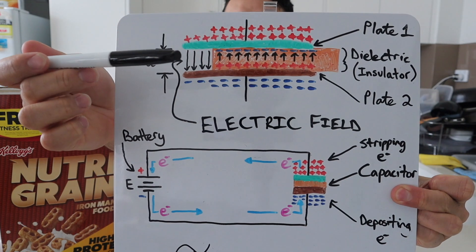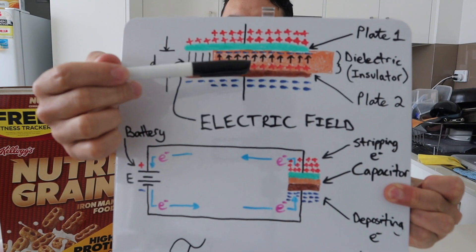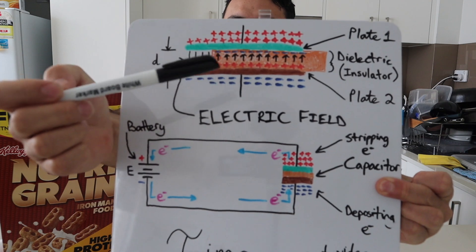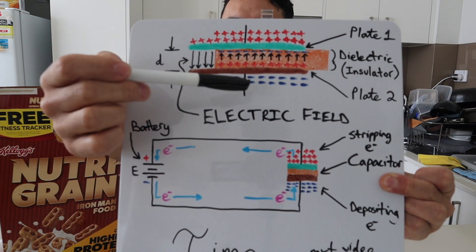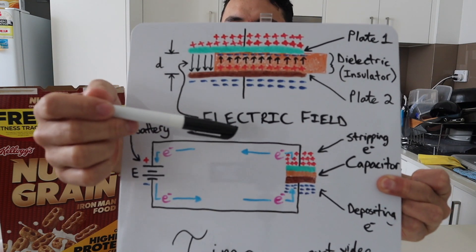A capacitor is essentially two conducting plates separated by a dielectric, or commonly known as an insulator. And when charged with opposing signs of charge, an electric field is present.